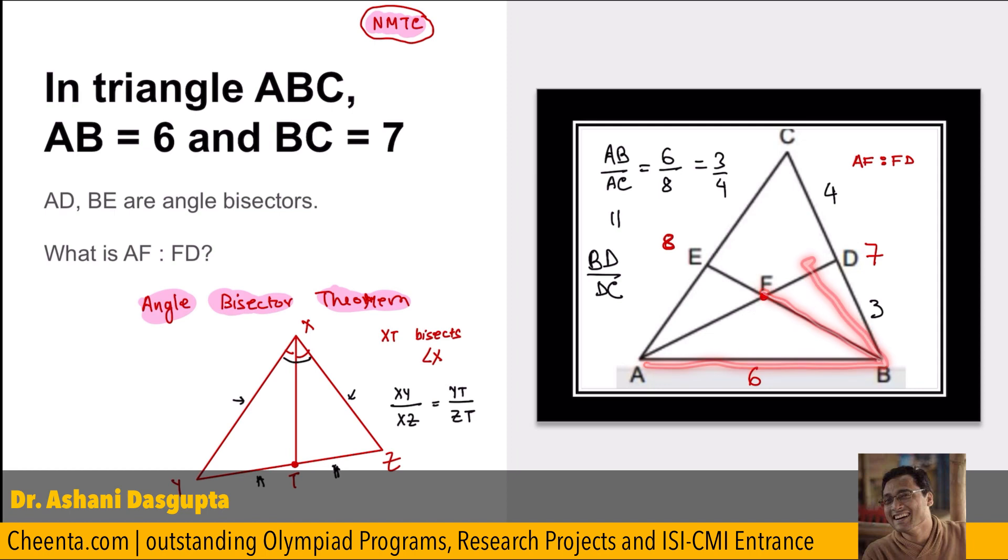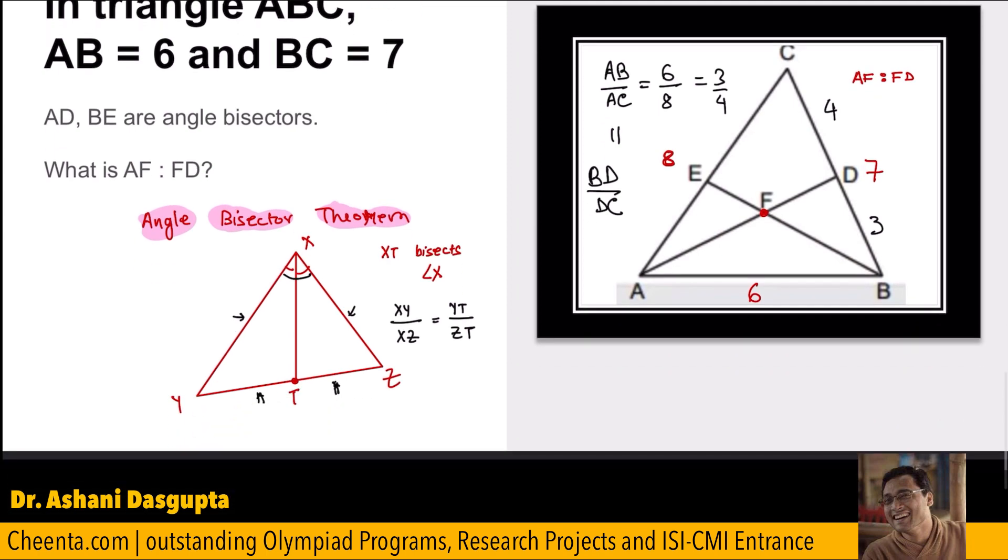Right. So, you can apply the angle bisector theorem in this little triangle. So, what do you have? You have AB over BD is equal to AF over DF.